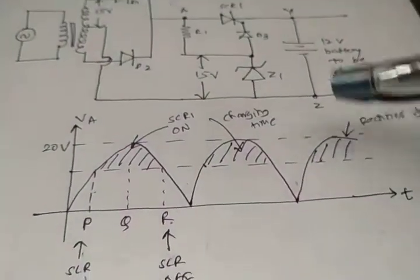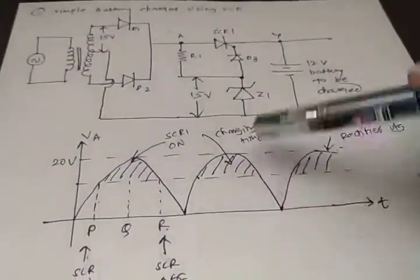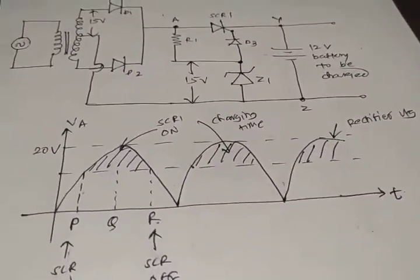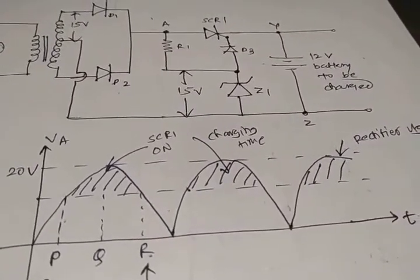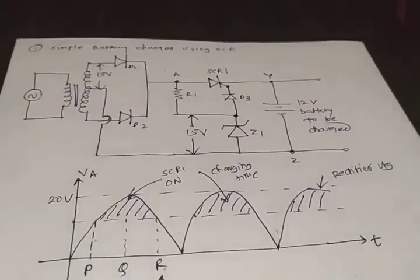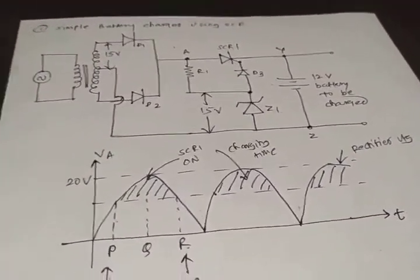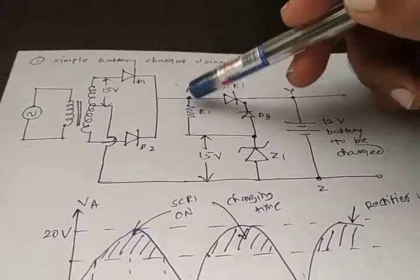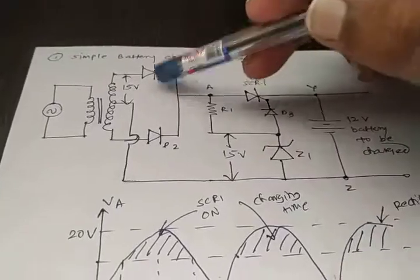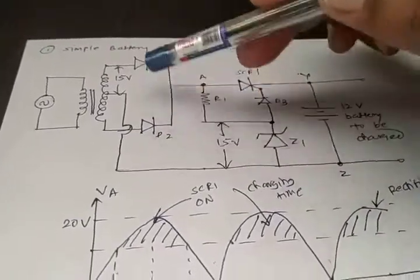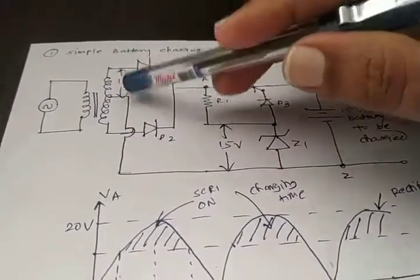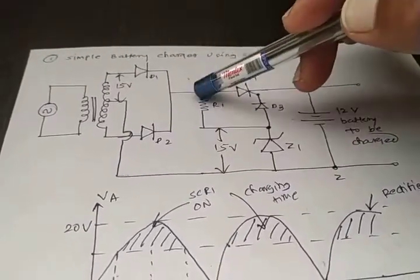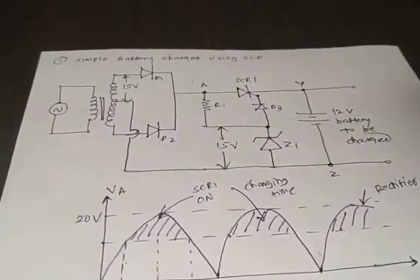From the waveform we can understand at which point the SCR is turned on. When we provide the voltage across the SCR, the voltage comes from point A — the initial voltage. After rectification is done, the voltage comes to point A and then we provide that voltage across the SCR.